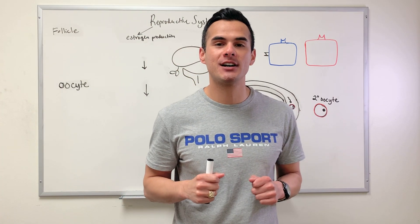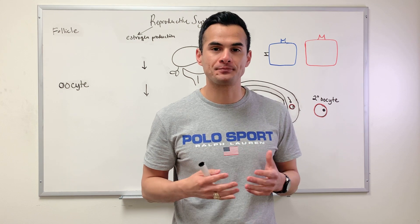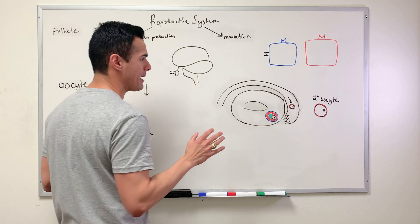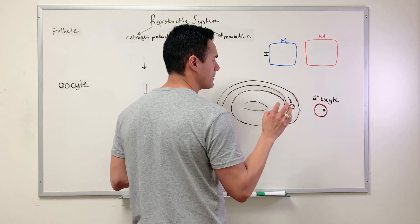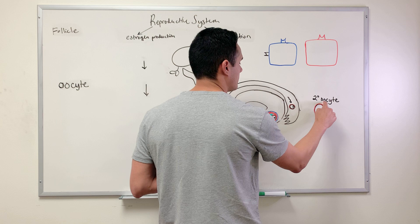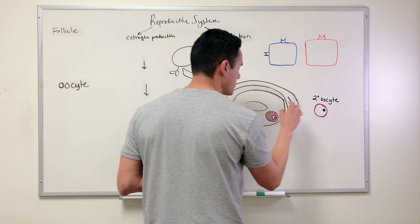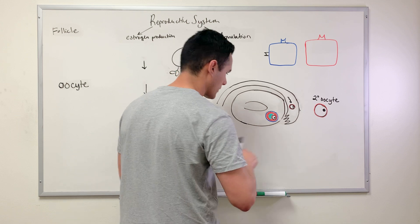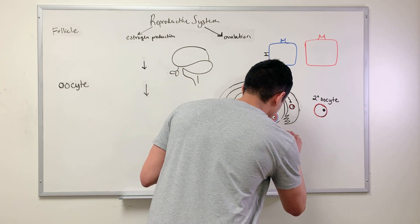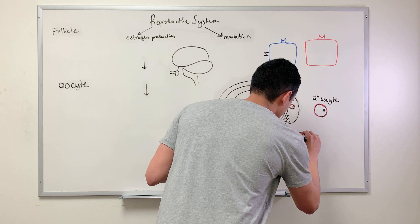In this lecture we're going to discuss estrogen production and ovulation. In order for ovulation to happen we need two main components: our secondary oocyte, or egg, and our mature dominant follicle.